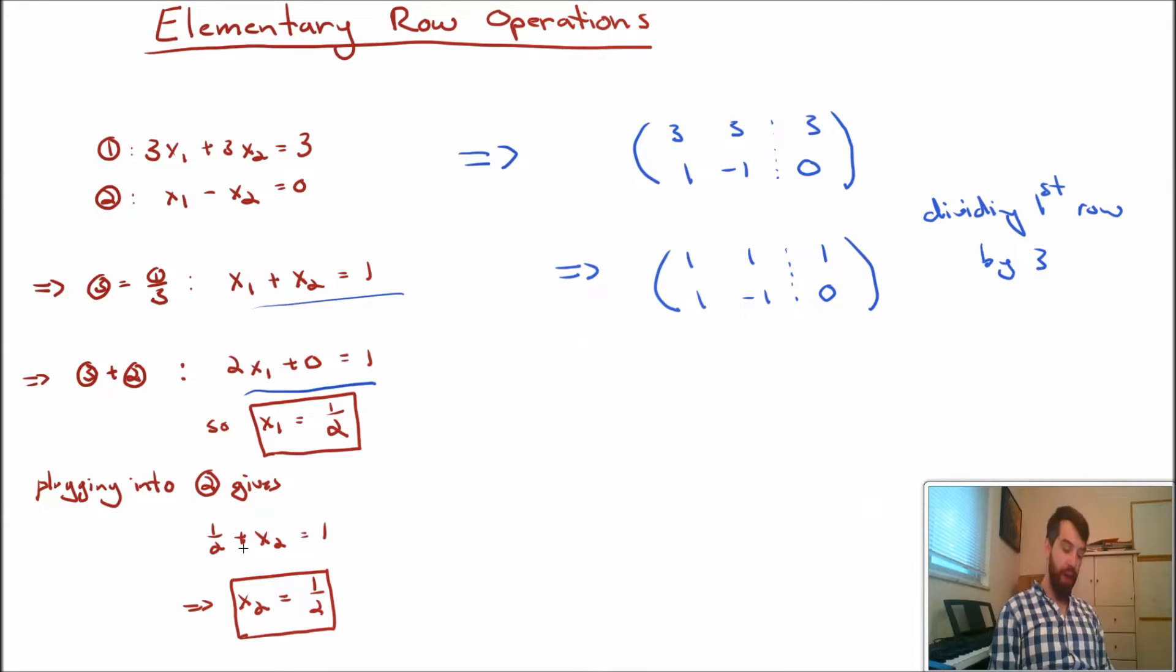Then in my ad hoc approach, my next one was to add this new thing that I just created, this new first row, and add that to the second row. So in other words, what I'm going to get is I don't change my first row at all. That remains 1, 1, 1. I'm not changing that.